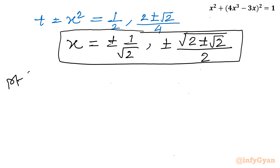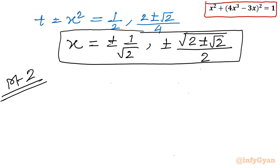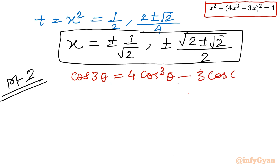Now for method number 2 using trigonometry. I will use the substitution x = cosθ, since we know the formula cos3θ = 4cos³θ - 3cosθ. Once we put x = cosθ, the expression 4x³ - 3x becomes cos3θ.